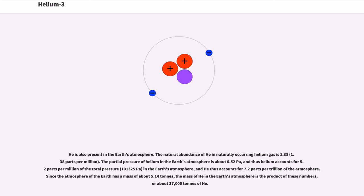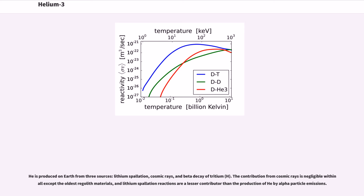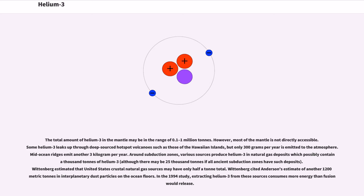He3 is produced on Earth from three sources: lithium spallation, cosmic rays, and beta decay of tritium. The contribution from cosmic rays is negligible within all except the oldest regolith materials, and lithium spallation reactions are a lesser contributor than the production of He4 by alpha particle emissions. The total amount of helium-3 in the mantle may be in the range of 0.1 to 1 million tons. However, most of the mantle is not directly accessible. Some helium-3 leaks up through deep-sourced hotspot volcanoes such as those of the Hawaiian Islands, but only 300 grams per year is emitted to the atmosphere. Mid-ocean ridges emit another 3 kg per year.